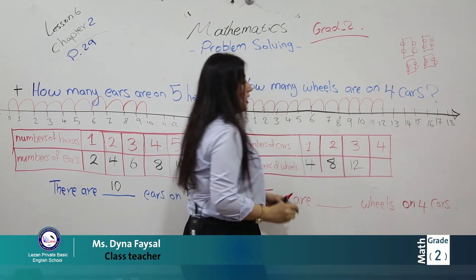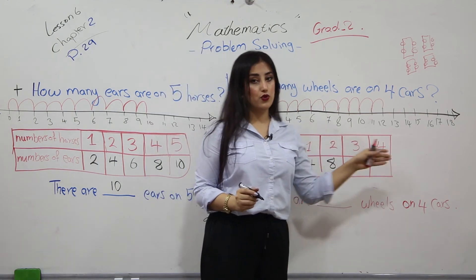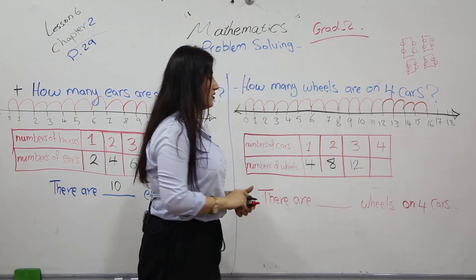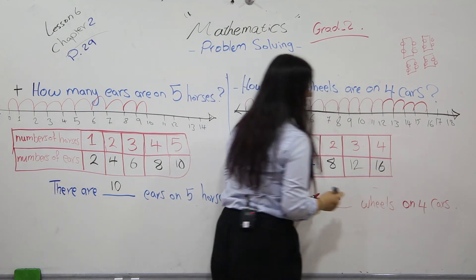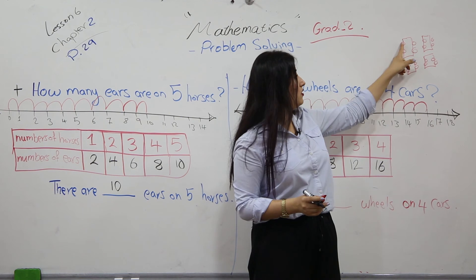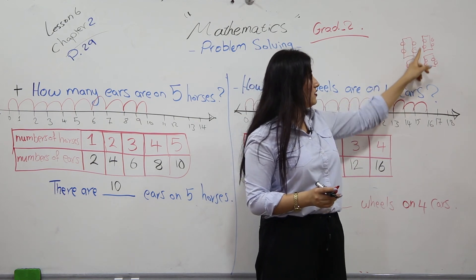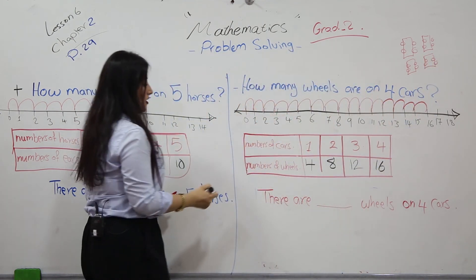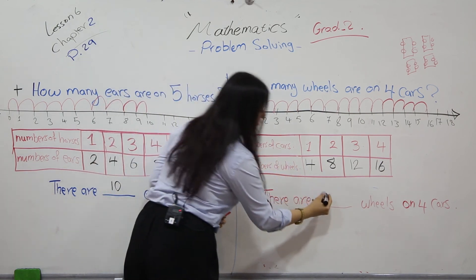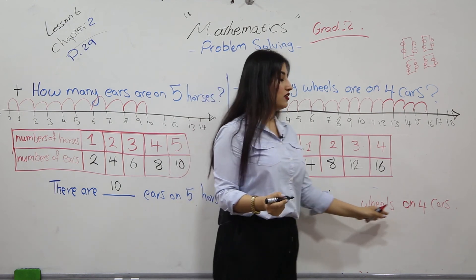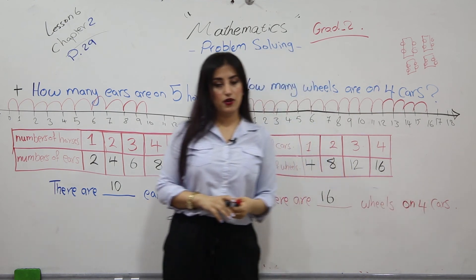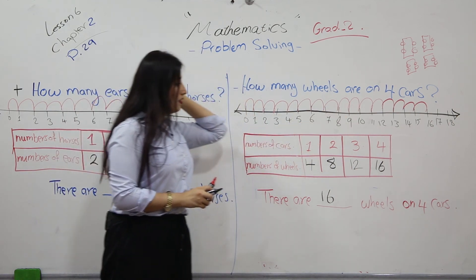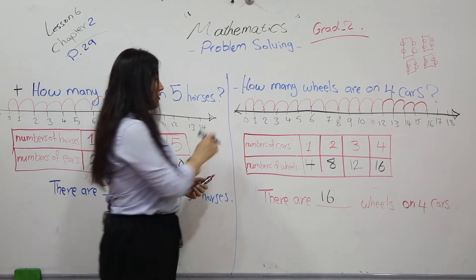If you add one more car, we jump — two, three, four — we end on sixteen. Let's verify: one, two, three, four, five, six, seven, eight, nine, ten, eleven, twelve, thirteen, fourteen, fifteen, sixteen. Our answer is correct. There are sixteen wheels on four cars. We used this number line just for help.